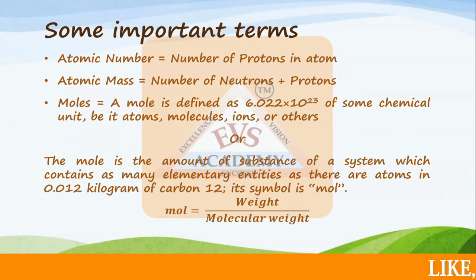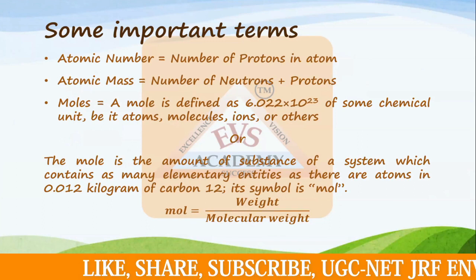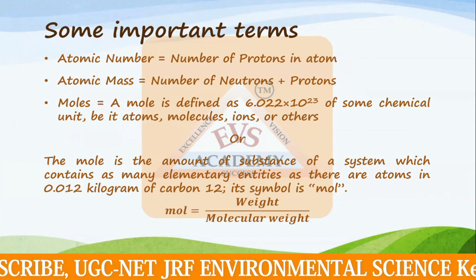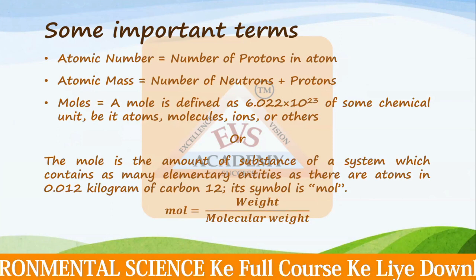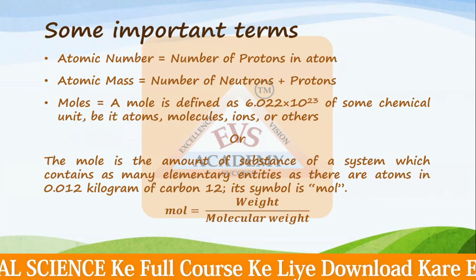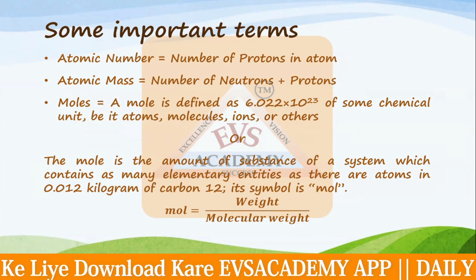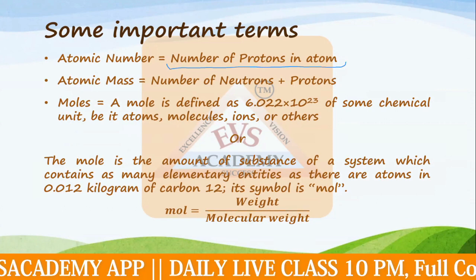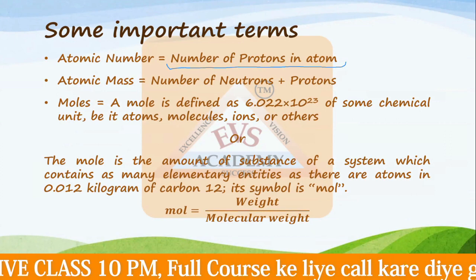Before starting Environmental Chemistry, we need to clarify some important basic terms. The very first term is the atomic number. The atomic number of any element is basically the number of protons present in an atom — not neutrons and not electrons. The atomic number is assigned to any element by counting only the number of protons present in that particular element.